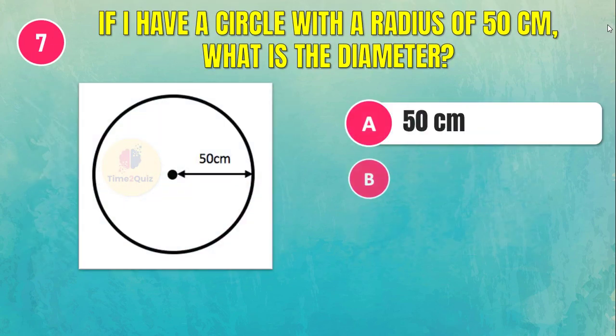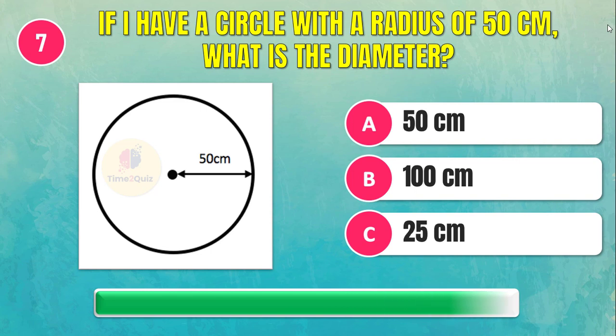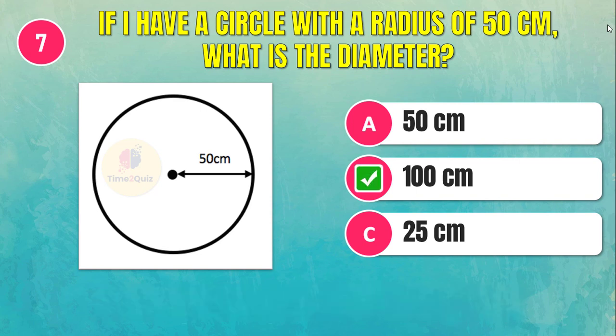If I have a circle with a radius of 50 centimeters, what is the diameter? The answer is 100 centimeters.